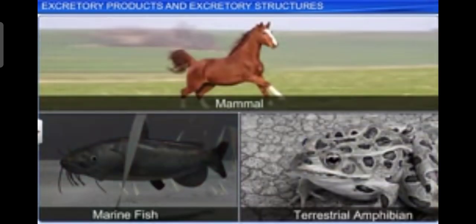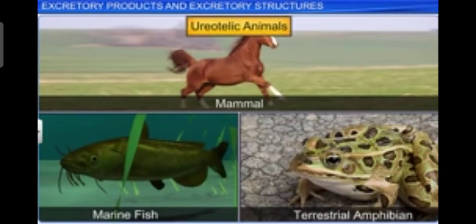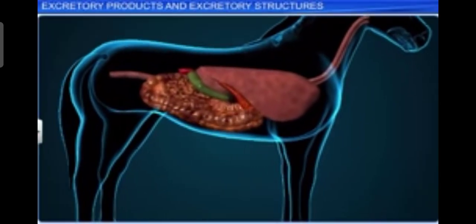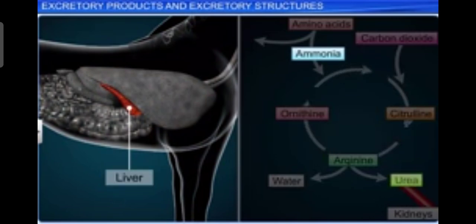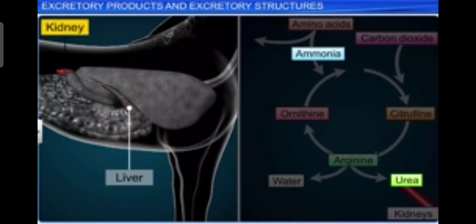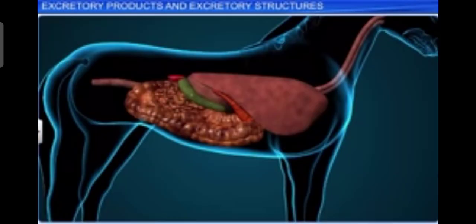Terrestrial adaptations necessitated the production of lesser toxic nitrogenous wastes like urea and uric acid for conservation of water. Mammals, many terrestrial amphibians, and marine fishes mainly excrete urea and are called ureotelic animals. Ammonia produced by metabolism is converted into urea in the liver of these animals and released into the blood, which is filtered and excreted by the kidneys. Some amount of urea may be retained in the kidney matrix to maintain a desired osmolarity.